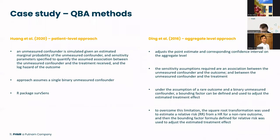To give a brief overview of the methods: the first is the approach by Huang et al., a patient-level approach whereby an unmeasured confounder is simulated given the estimated marginal probability of the unmeasured confounder and sensitivity parameters specifying the assumed association between the unmeasured confounder and treatment received, and between the unmeasured confounder and the log hazard of the outcome. This approach assumes a single binary unmeasured confounder, and there's an existing R package called survSensitivity.